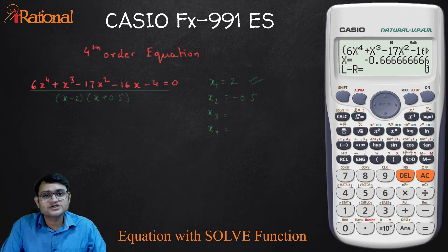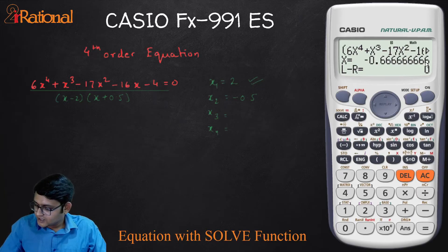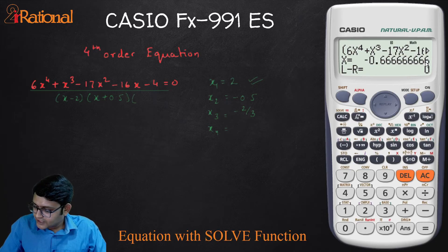This is 0.66 recurring. That means, it is 2 by 3, minus 2 by 3. So the next that I will divide would be X plus 2 by 3.